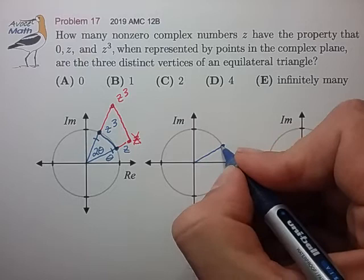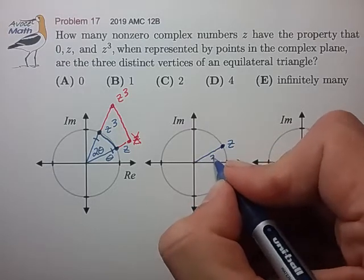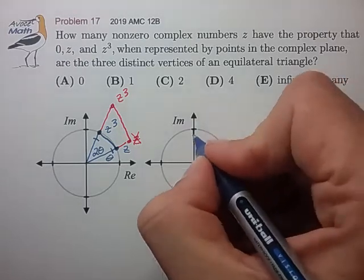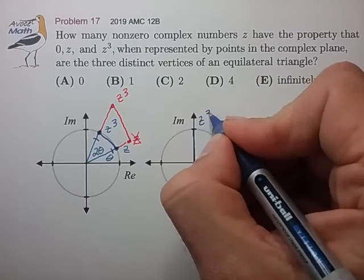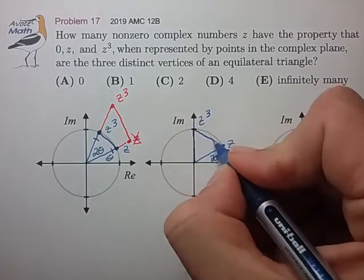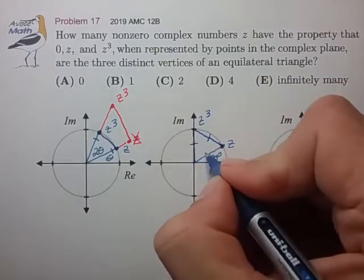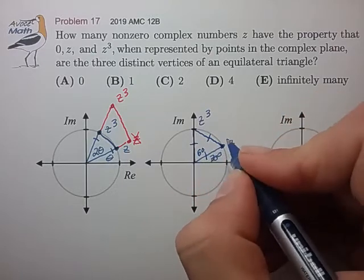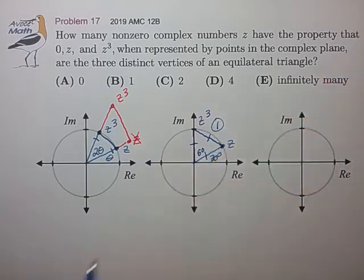So it doesn't take too much imagination to realize that a z at 30 degrees would park z cubed at 90 degrees, and that would form a gap angle of 60 degrees, and that would be our first solution for an equilateral triangle. Now what happens when z advances further?